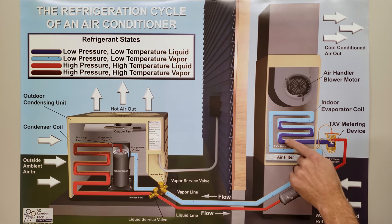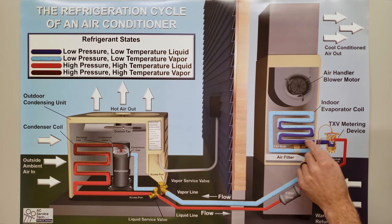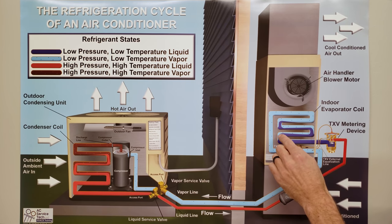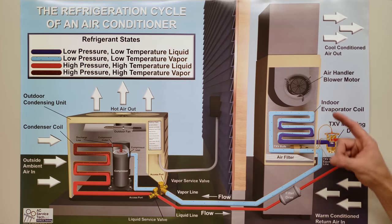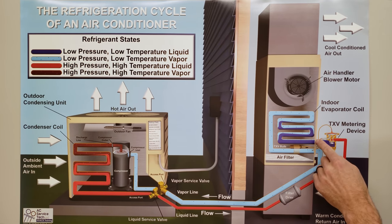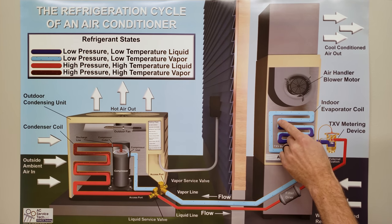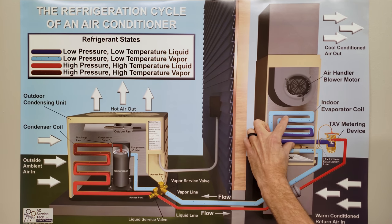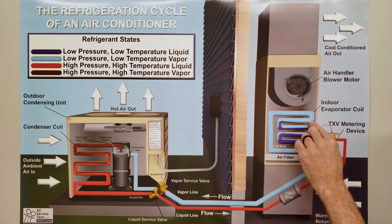As long as the refrigerant is saturated, it will absorb more and more heat without increasing in temperature. What changes is that the amount of vapor in the saturated mix keeps increasing while the amount of liquid decreases — but it stays at 40°F throughout. During this entire time it's been absorbing a large amount of heat energy from the air. Once it's completely in the vapor state, the temperature begins to increase.